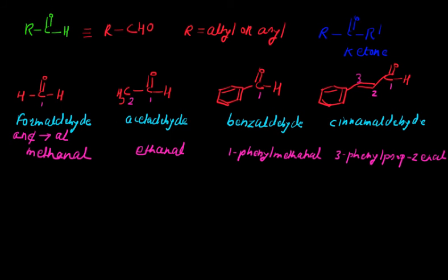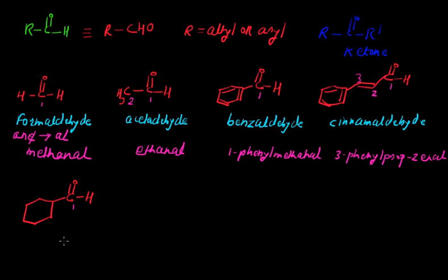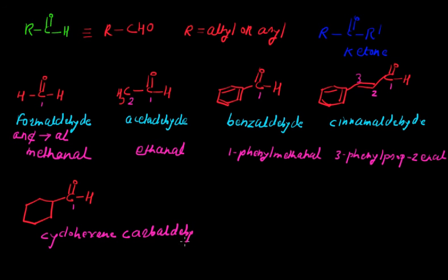Let's take another example with a cyclic substituent. If we have a cyclic group attached to a C=O–H group, we can also give it an IUPAC name. At carbon number 1 we have a cyclohexane substituent. When a cyclic group is attached to the carbonyl carbon of an aldehyde, we write the name of that cyclic compound — cyclohexane — and then end the name with 'carbaldehyde', giving cyclohexanecarbaldehyde.